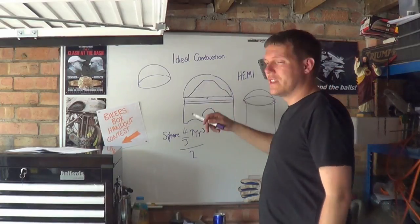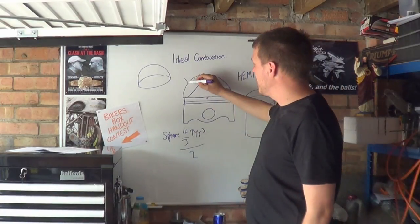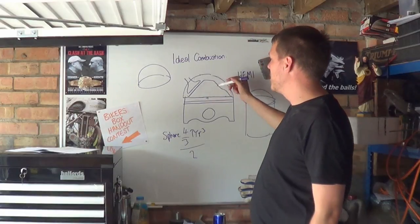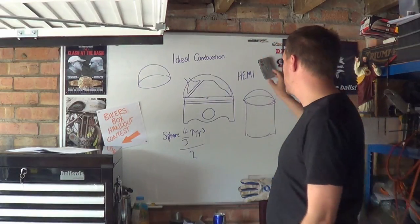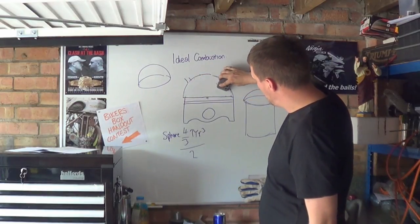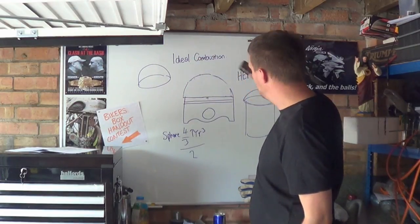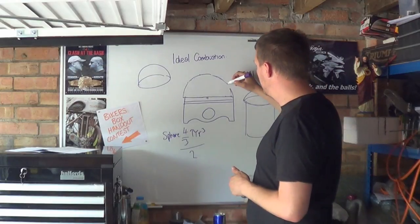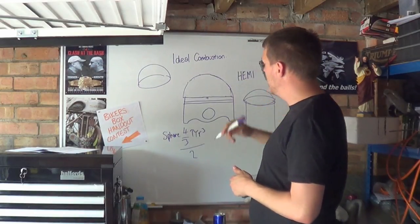If you look at most motorbikes they're rocking 11, 12, some of them even nearly 13 to 1 compression ratios. That's the problem with the hemis. You might see a picture like this where what they have to do is they have to add ship loads of material to the top of these pistons for these hemis.